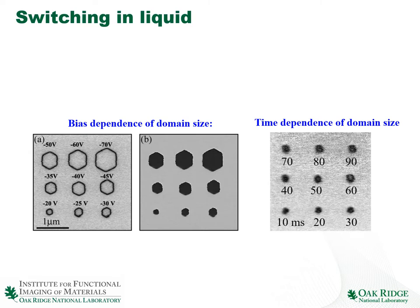The next question is whether it is possible to induce polarization switching in the liquid environment. As a reminder, polarization switching in ambient can be explored as a function of bias amplitude and pulse duration. In the imaging part we noted that we can use pretty high bias amplitudes as long as frequencies are high, but switching is performed in the DC regime, so we must be very careful about the interplay between switching and potential electrochemical reactions in the solvent.